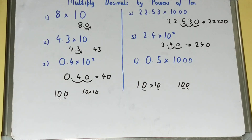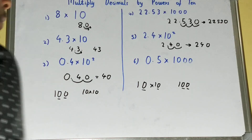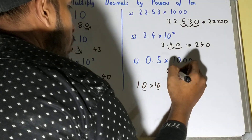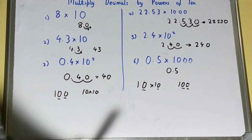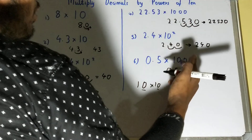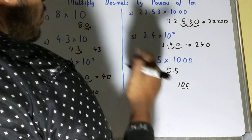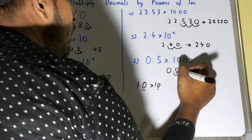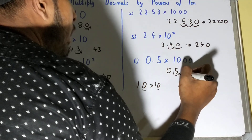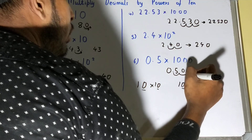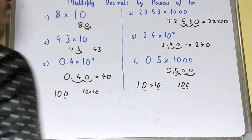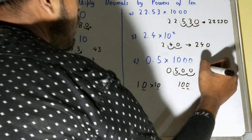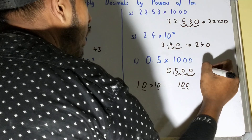Let's see the next one: 0.5 multiplied by 1000. We write the number and see how many zeros are in 1000 — one, two, three. So we move three decimal places to the right. For the first place we have 5; for the second we don't have a digit so we put zero; for the third also we put zero. The number becomes 500.